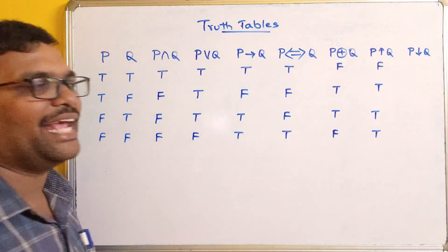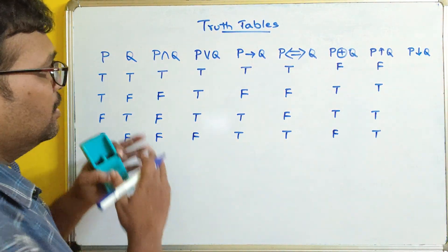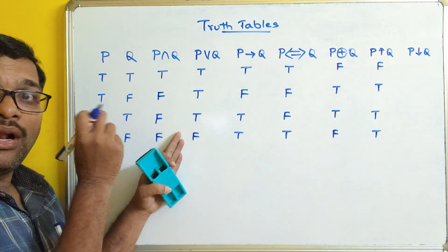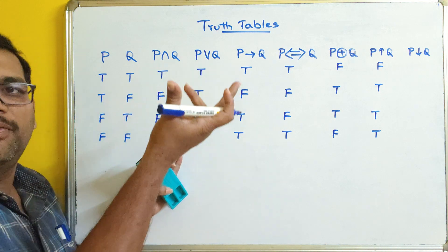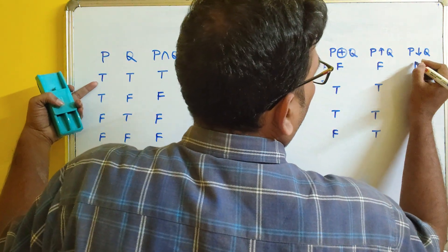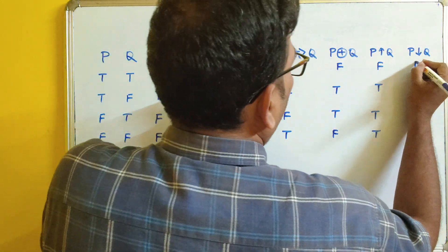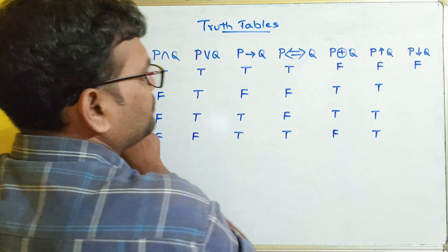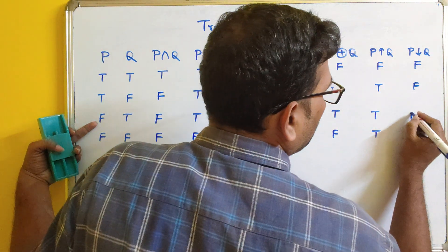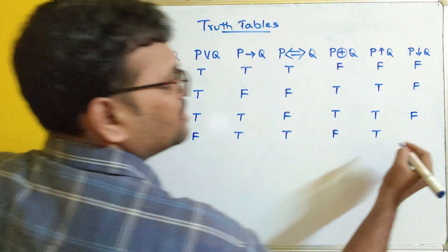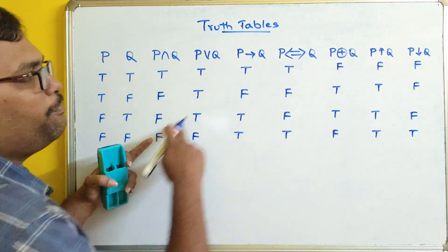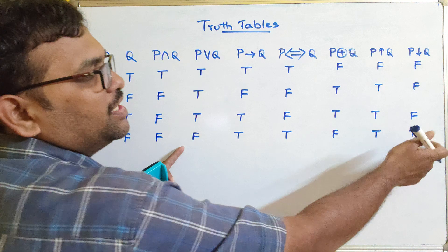And the last one is NOR — which is the negation of OR. If any one of the propositions' truth values is true, then the result will be false. So: true and true gives false; true and false gives false; false and true gives false; false and false gives true. You can see that NOR is the negation of P or Q.